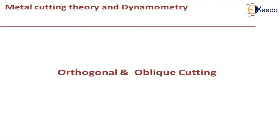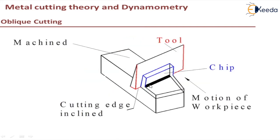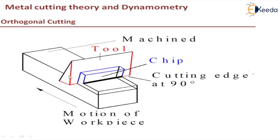Now let us discuss orthogonal and oblique cutting. As you can see in the sketch, the cutting edge highlighted in the black line is at 90 degrees to the direction of motion of the workpiece in orthogonal cutting. Whereas in oblique cutting, the cutting edge is at an angle other than 90 degrees with respect to the direction of motion of the workpiece. There is a plastic deformation zone ahead of the cutting edge, and then there is a shear plane and a secondary deformation zone. The zone of plastic deformation lies between the chip and the undeformed or only elastically deformed work material. The size of the plastically deforming zone varies according to the cutting conditions.